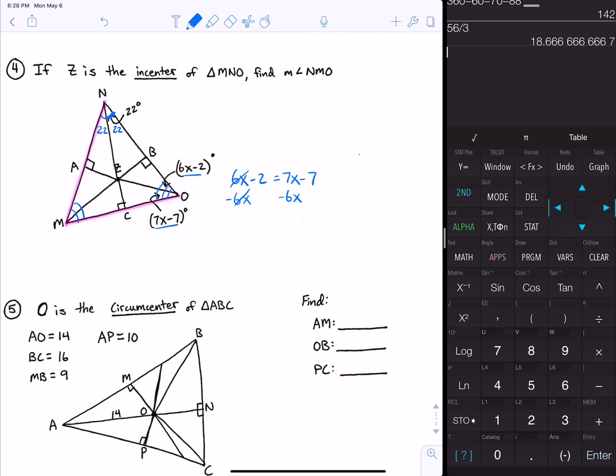Let's say 6x minus 2 equals 7x minus 7 and figure out what x is. If I subtract 6x, I get negative 2 equals x minus 7. If I add 7, I get 5 is equal to x. I can plug that back in now, so 6 times 5 minus 2 is 28 degrees. So now I know each one of these is 28 degrees, which will help me figure out the one I'm looking for because all the angles of a triangle add up to 180.